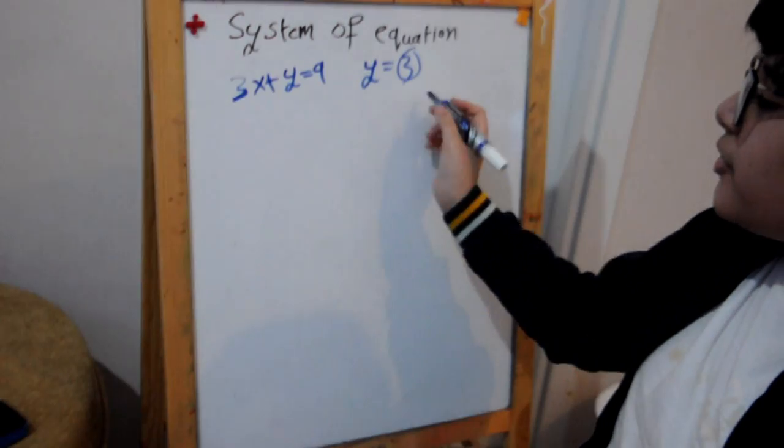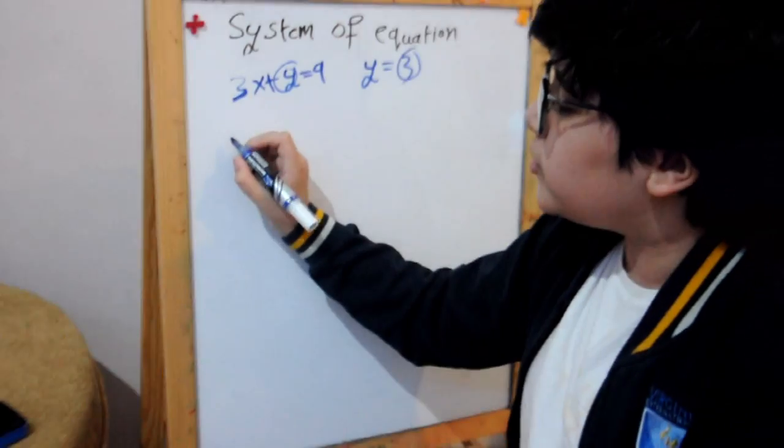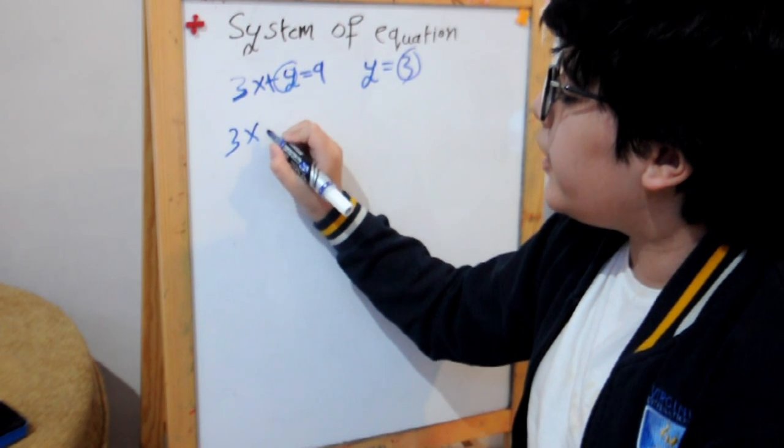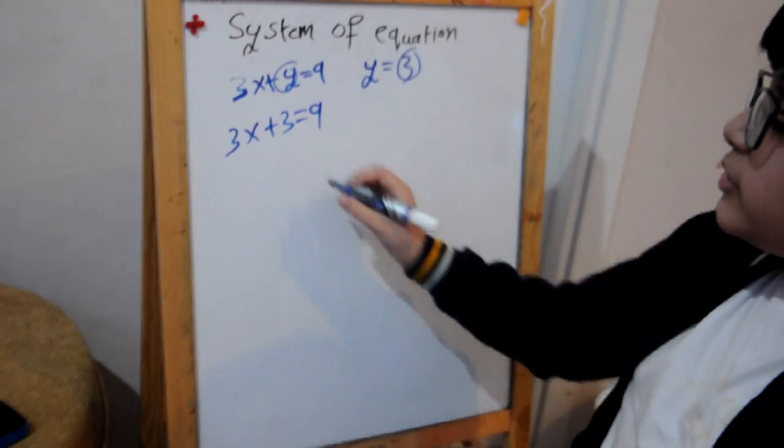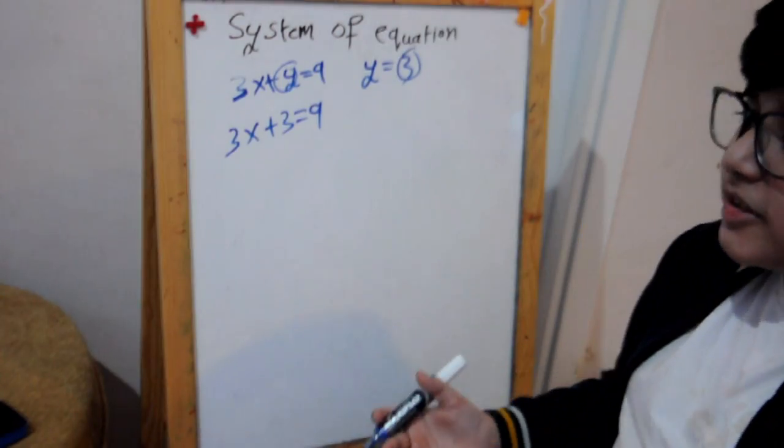So as you know, 3 will go instead of y, so it will look like this: 3x plus 3 equals 9. Now, instead of putting it to the other side making it minus, we will subtract from both sides negative 3.